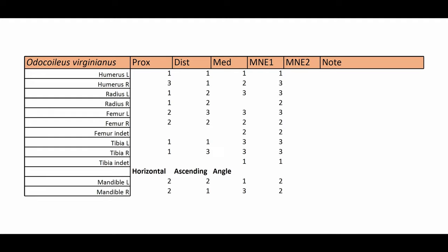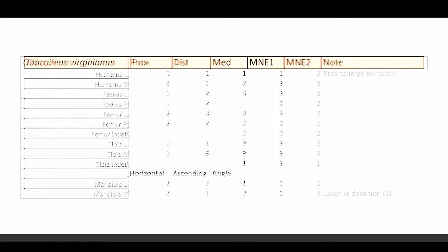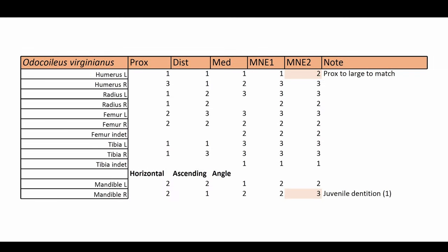So once I've done this first pass, I'm going to go back to my notes to see if any of those sections can't be matched with each other for whatever reason, and then start making some adjustments. So in the MNE2 column, I've highlighted the ones that needed to be changed. So for the left humerus, there was a proximal end that was much too big, too robust to match the distal or medial fragments, which means that there must be at least two left humeri in this sample, not just one.